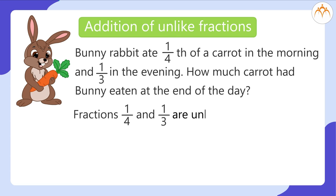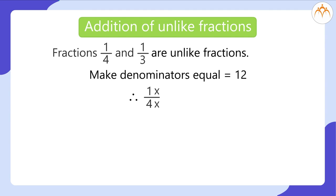Fractions 1 by 4 and 1 by 3 are unlike fractions. Make denominators equal to 12. Therefore, 1 multiplied by 3 by 4 multiplied by 3, plus 1 multiplied by 4 by 3 multiplied by 4. Which gives us 3 by 12 plus 4 by 12, equal to 3 plus 4 by 12. Add the numerator 3 and 4, which gives us 7 by 12.